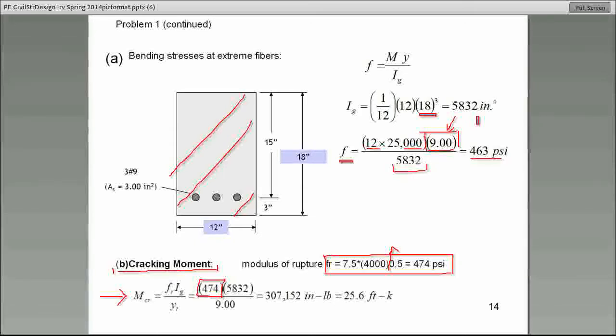Please make a note of that. And Donald says see the equation on page 12. All right? So when we do this, substitute all of this, the cracking moment comes out to be 25.6 foot-kips.